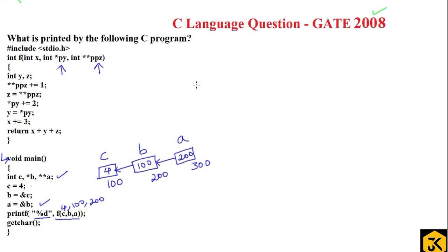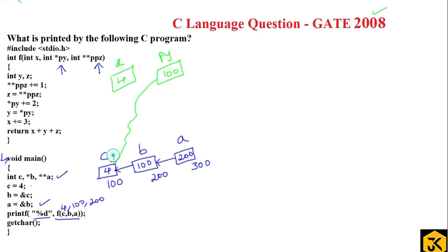Inside the function, a temporary variable x is created containing the value 4. py is a pointer which contains the address 100, so it points to c's memory location. ppz is a double pointer which contains the value 200, so it is connected to b's memory location.